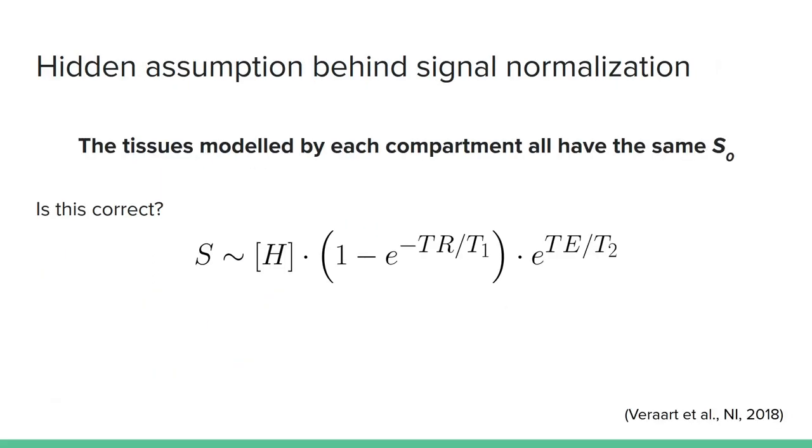The key operation that allowed us to define the multi-compartment model of the signal shape was the normalization by the S₀, where we divided the diffusion signal by its non-diffusion component, which is the S₀. The assumption that we hide behind this operation is that the S₀ of each compartment is the same. Now, we are going to question this assumption and see if it actually holds true.